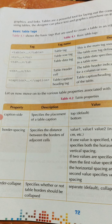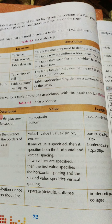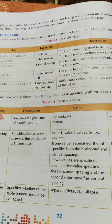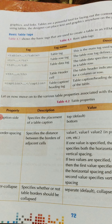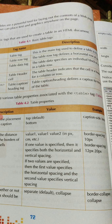The fourth tag is TH — the table header cell tag. The table header indicates that the cell is a header for a column or row. As the name suggests, the header is always at the top, so TH is used to indicate the cell at the head of a column or row.